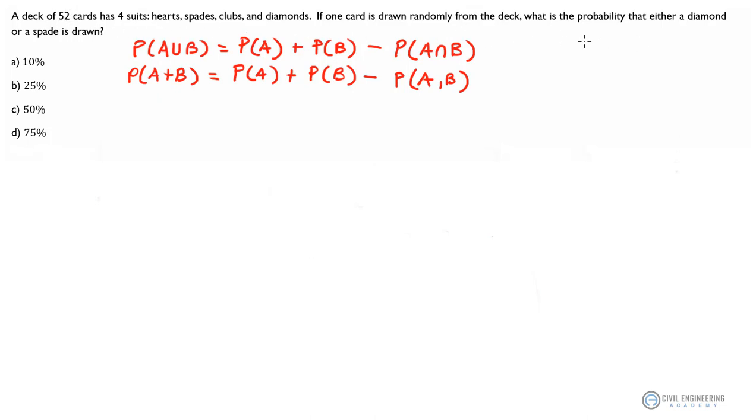I could just intuitively figure this out. If I draw one card out of that total stack of 52 cards, I'm gonna randomly have a chance of getting either a diamond or a spade—it's gonna be 50 percent.